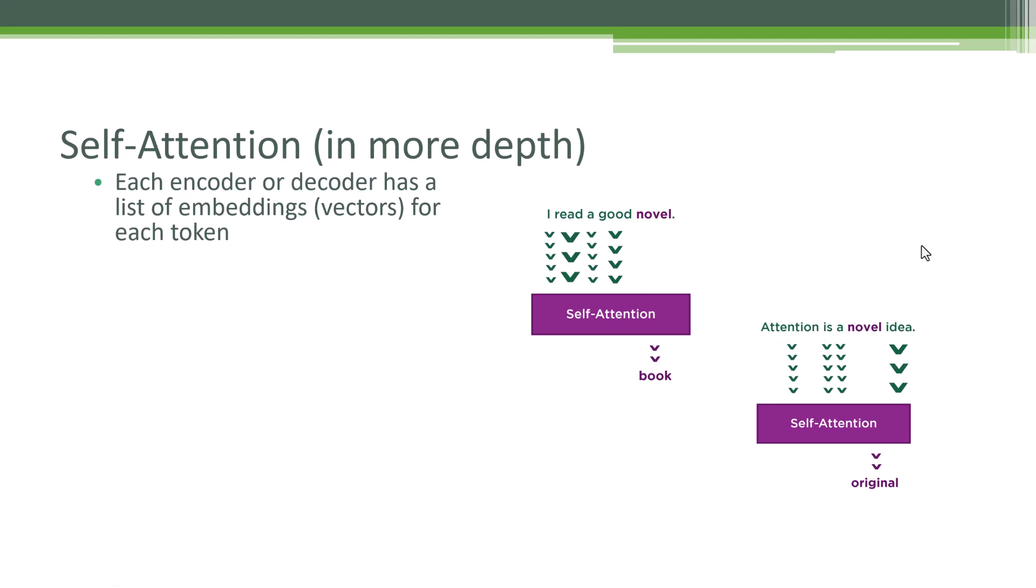So self-attention's job is going to be to try to translate each token into its true meaning. The vector that we end up with after self-attention will be something that encapsulates the meaning of a book in this example. And in this example, it might be a vector that more encapsulates the meaning of the concept of original. And when I say encapsulates the meaning, what that really means is where are we in that embedding layer that kind of maps where similar words are to each other.